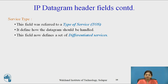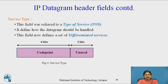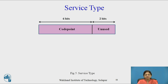Another important field provided by the IP datagram header is service type. This field was previously referred to as type of service. It defines how the data should be handled — this field now defines a set of differentiated services. The service type reserves a total of 8 bits: 6 bits are reserved for the code point and the remaining 2 bits are unused.